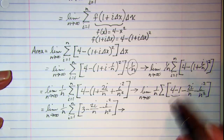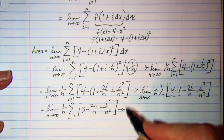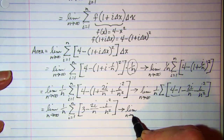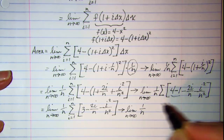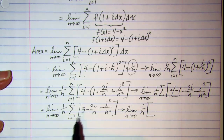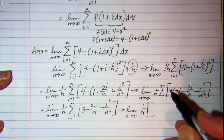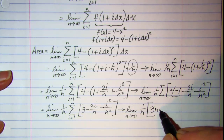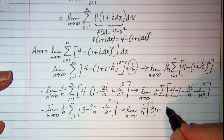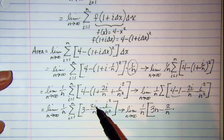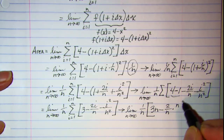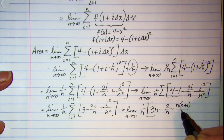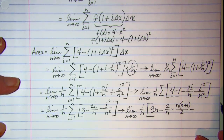Now let's apply the summation formulas. The summation of a constant is just the constant times the upper limit of summation, so we get 3n. Then we separate 2 over n from i, giving 2 over n times the summation of i, which equals n times (n plus 1) over 2. Then we separate 1 over n squared from i squared and apply the summation formula for i squared, which is n times (n plus 1) times (2n plus 1) over 6.